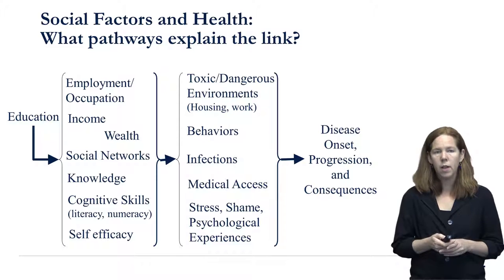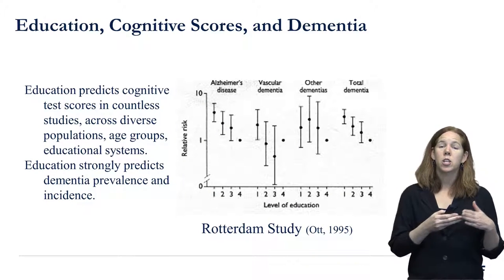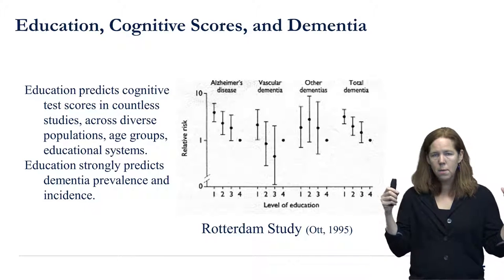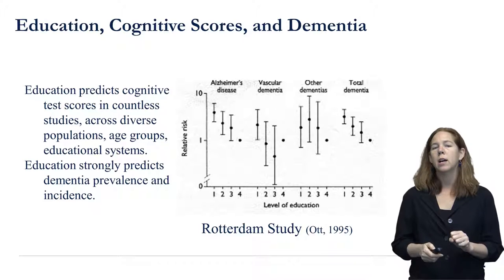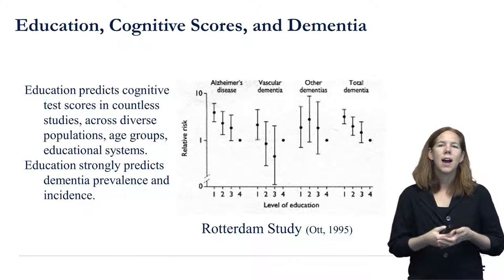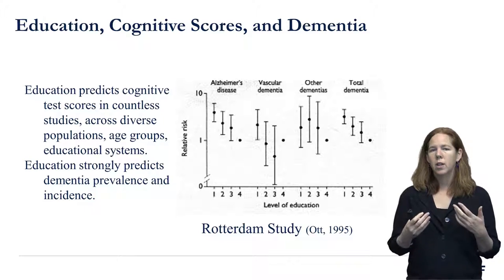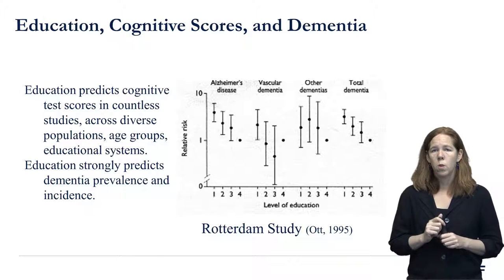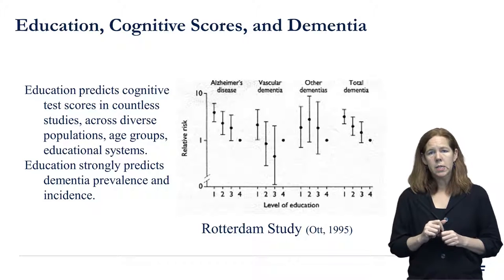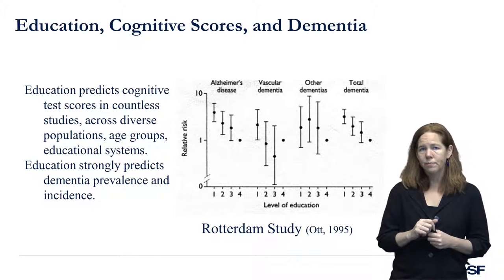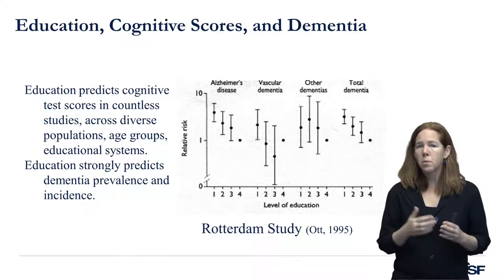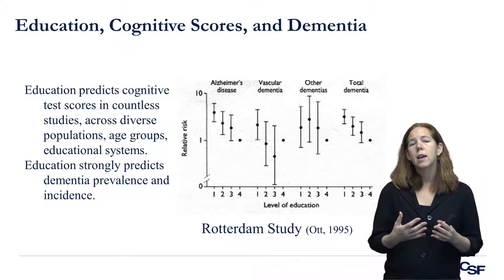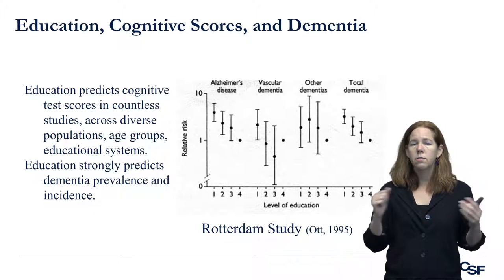So it's easy to see how education might be important, but how do we provide compelling empirical evidence? As a public health person, I don't just want to understand what's happening — I want to know how I can change it. I'll talk about the work I do on Alzheimer's disease, dementia, and cognitive aging. Alzheimer's disease is probably the most common cause of dementia, most common in older adults, and it causes a progressive loss of memory and cognitive function.